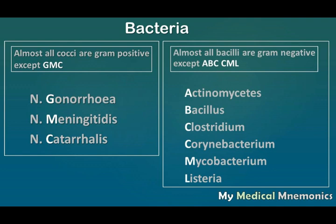All cocci are gram positive except these three — Neisseria gonorrhoeae, Neisseria meningitidis, and Neisseria catarrhalis — that is GMC. We remember the exceptions and leave the rest, so any cocci apart from these will be gram positive. This way you can remember gram positive cocci and gram negative cocci using GMC.